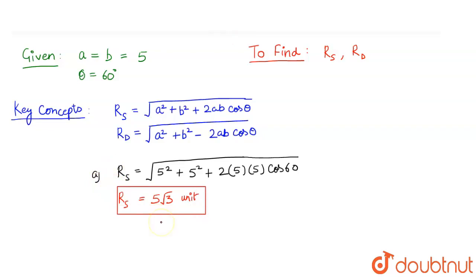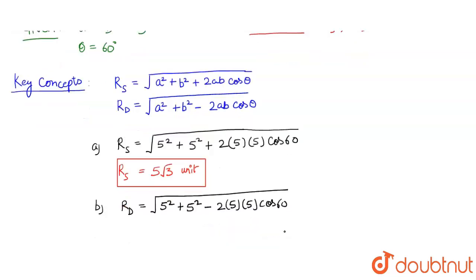Now we will proceed to solve the second part. That is the difference of the two vectors. So this will be the same, instead of plus, at here we will have minus. So everything else would be the same. So now on solving this,